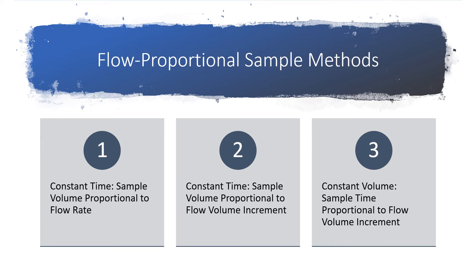The second method is also a constant time technique. Sample aliquots are once again collected at equal increments of time during the storm event, similar to Method 1. However, the amount of water removed from each aliquot is proportional to the volume of flow since the preceding aliquot was collected. The third and final method is a constant volume technique, where sample aliquots of equal volume are taken at equal increments of flow volume, regardless of time, and combined to form a single composite sample.